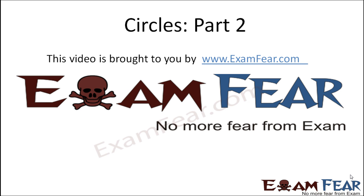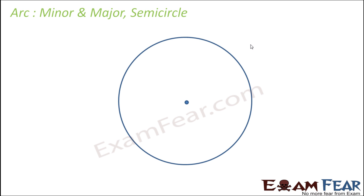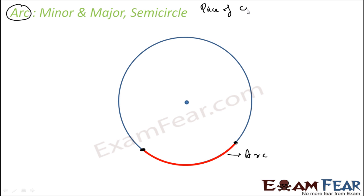Hello friends, this video on circles part 2 is brought to you by examfear.com. Let's understand a few more terms. An arc is nothing but a piece of circle between two points. For example, if you have two points and join them you get a chord, but the piece of the circle itself — the red one — is called an arc. This is called an arc.